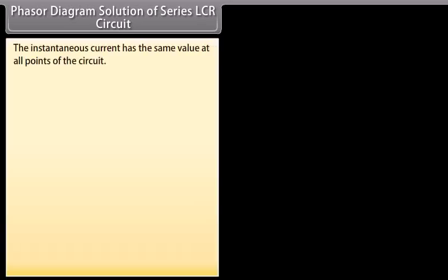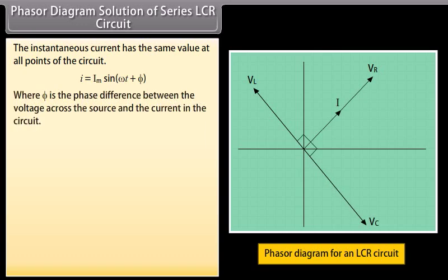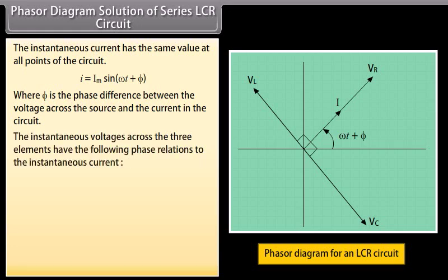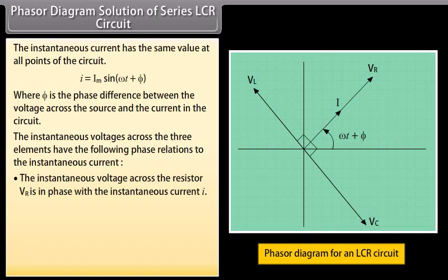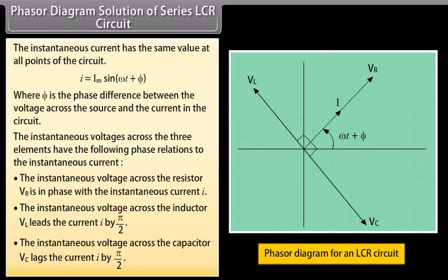Phasor diagram solution of series LCR circuit: The instantaneous current has the same value at all points of the circuit: I = Im sin(ωt + φ), where φ is the phase difference between the voltage across the source and the current in the circuit. The instantaneous voltage across the resistor Vr is in phase with the instantaneous current I. The instantaneous voltage across the inductor Vl leads the current I by π/2. The instantaneous voltage across the capacitor Vc lags the current I by π/2.